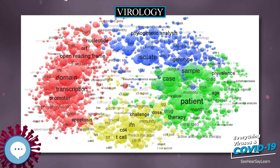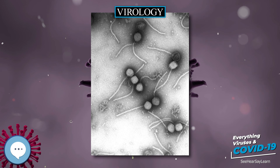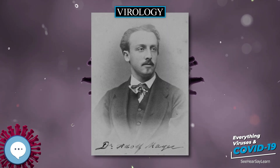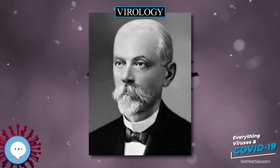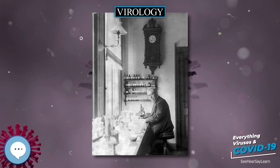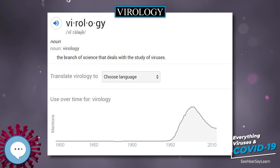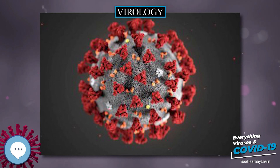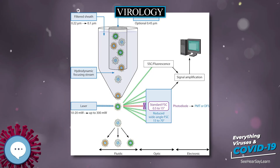By 1985, Harald zur Hausen had shown that two strains of human papillomavirus (HPV) cause most cases of cervical cancer. Two vaccines protecting against these strains were released in 2006. In 2006 and 2007 it was reported that introducing a small number of specific transcription factor genes into normal skin cells of mice or humans can turn these cells into pluripotent stem cells, known as induced pluripotent stem cells. The technique uses modified retroviruses to transform the cells; this is a potential problem for human therapy since these viruses integrate their genes at a random location in the host's genome, which can interrupt other genes and potentially cause cancer.